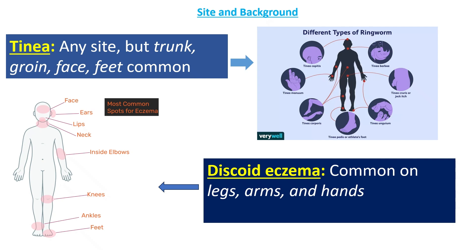Tinea can appear almost anywhere, especially in warm, moist areas. Discoid eczema prefers the limbs, particularly the shins and forearms, and often affects people with dry skin or atopy.